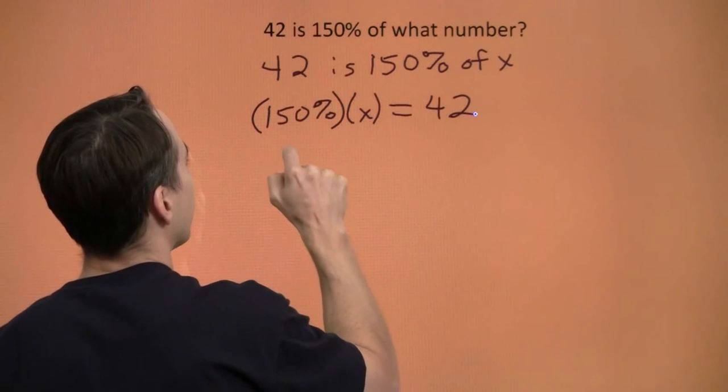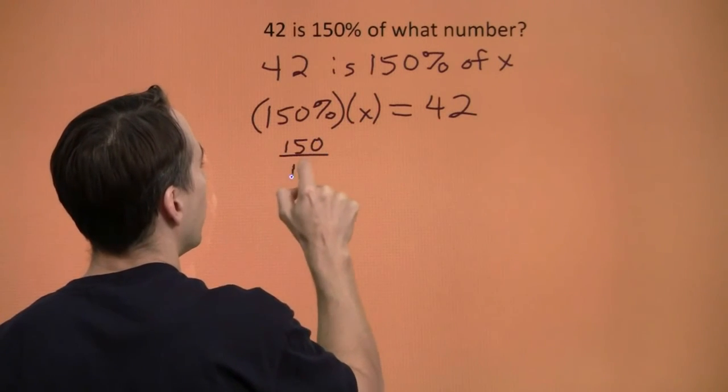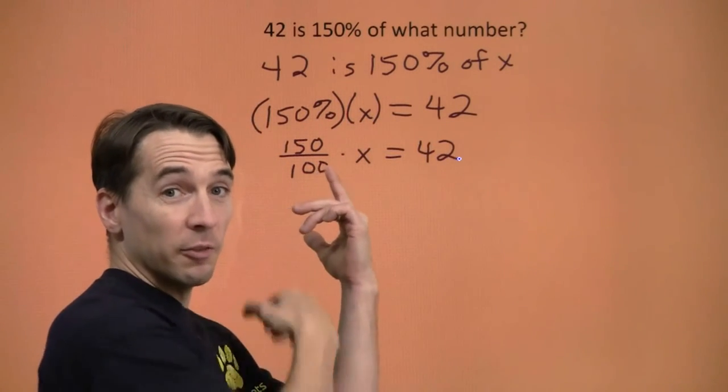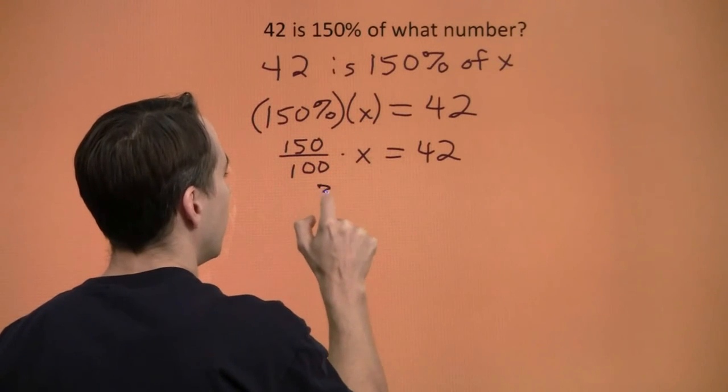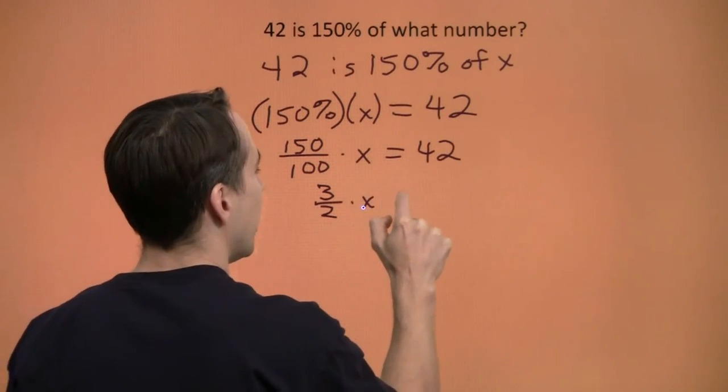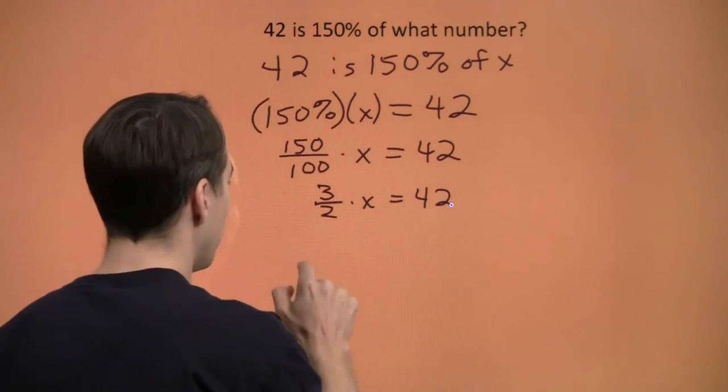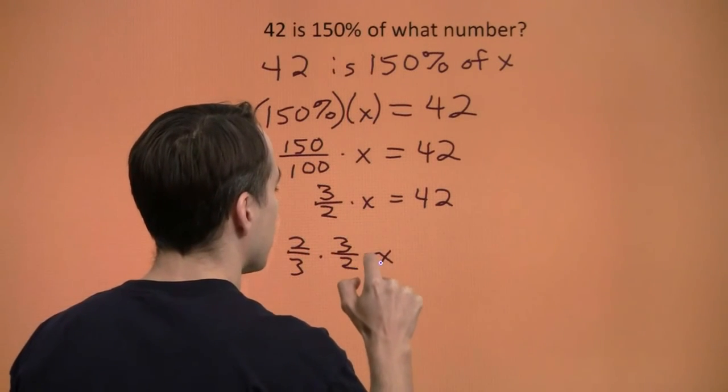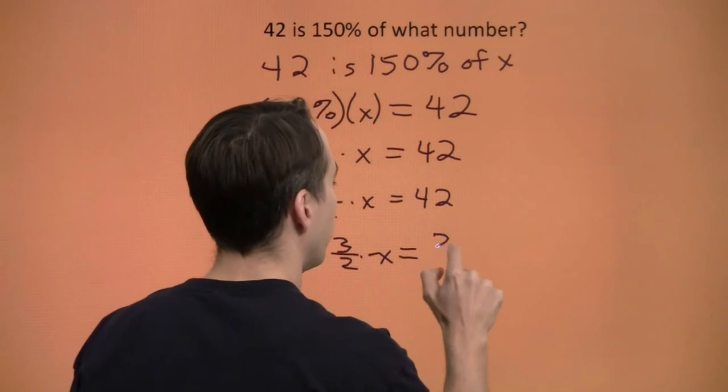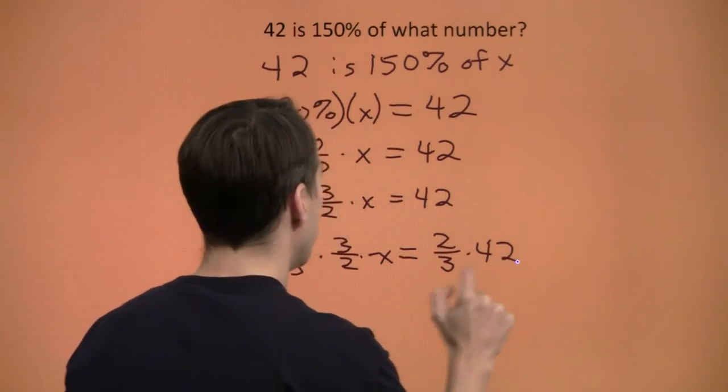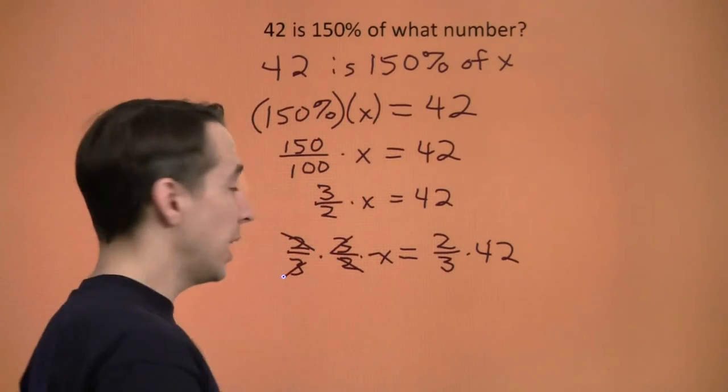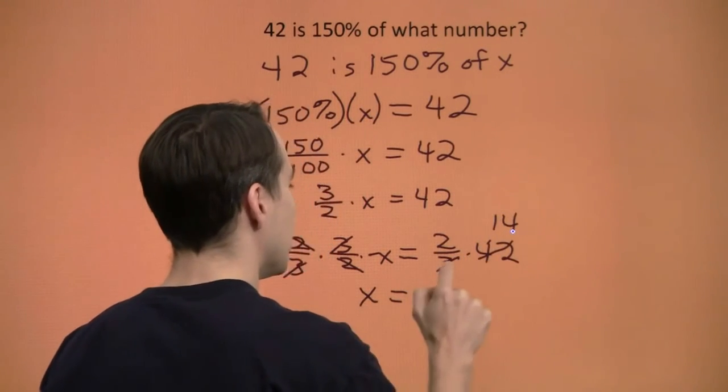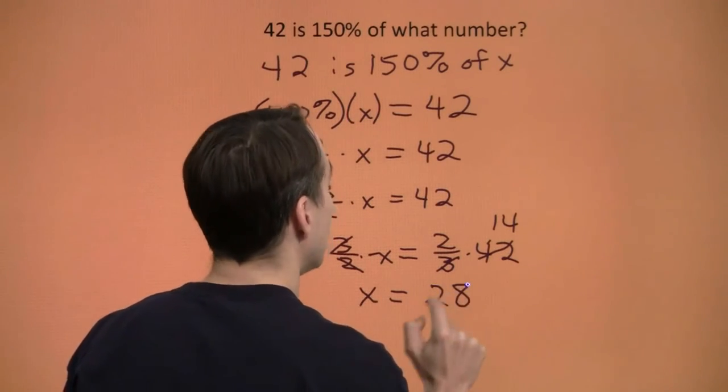150 percent, we can write that as a fraction, as 150 over 100 times x is 42. We'll simplify that fraction first. Take out the common factor of 50, and we'll have 3 halves times x is 42. Multiply both sides by 2 thirds to knock out that 3 halves. 2 thirds times 3 halves times x equals 2 thirds times 42. 2 thirds cancels with the 3 halves. Take out a common factor of 3. 3 goes into 42 14 times, and x is 2 times 14, is 28.